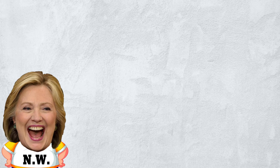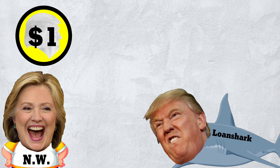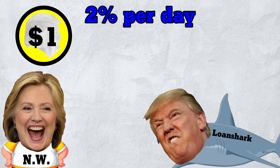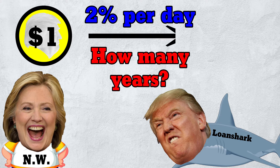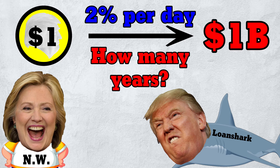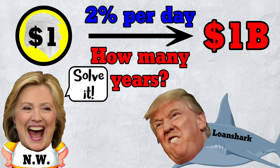Now for the thumbnail problem. A nasty woman borrows $1 from a loan shark at an interest rate of 2% per day. Roughly how many years before her debt hits 1 billion? I'll end here, but you should be able to solve this on your own within a minute.